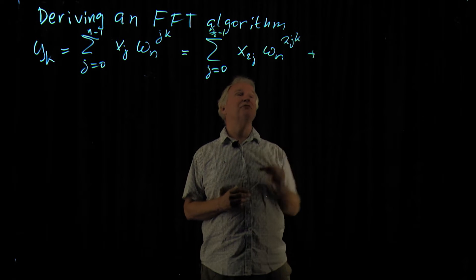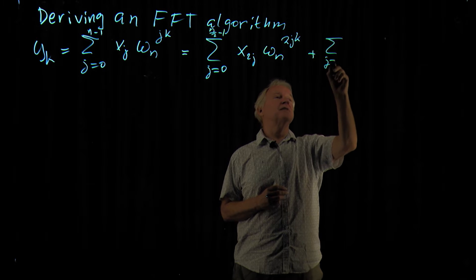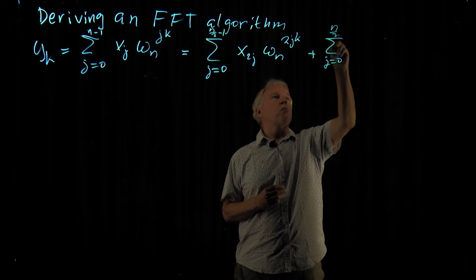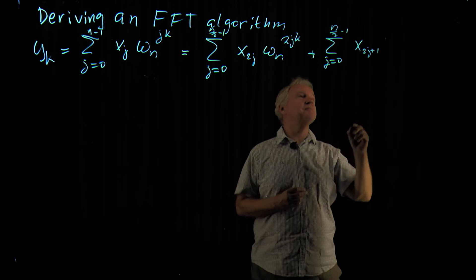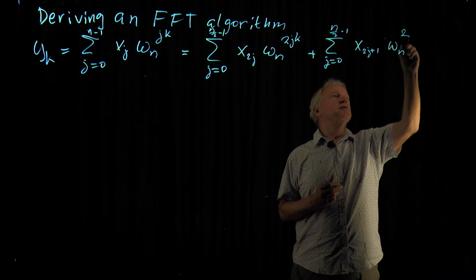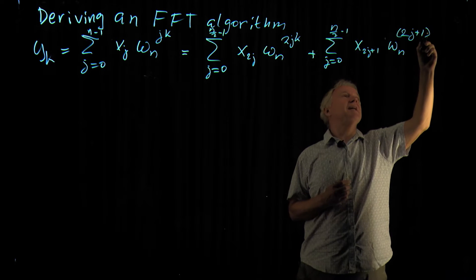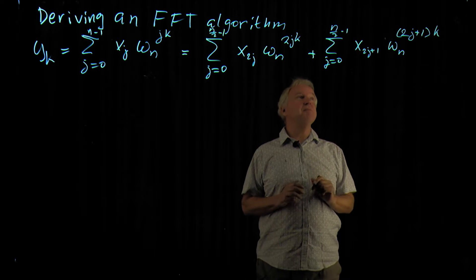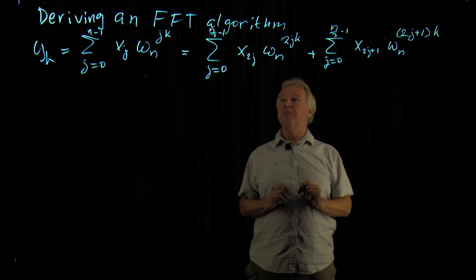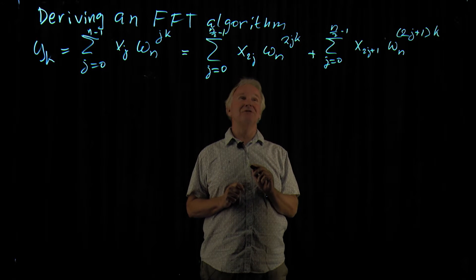So this is the even part. And then we do something similar for the odd part: x of 2j plus 1, omega_n to the power (2j+1)k. This already looks a bit like a Fourier transform of half the size.